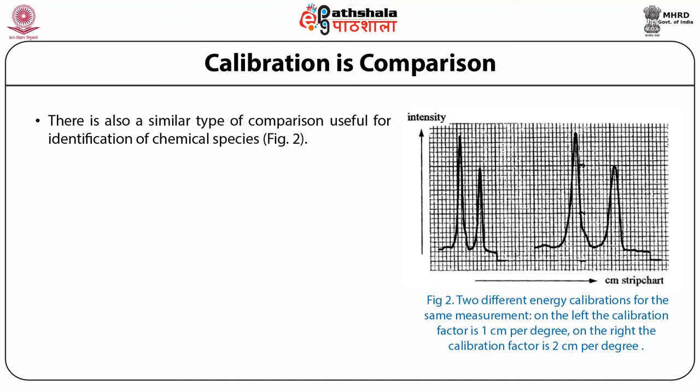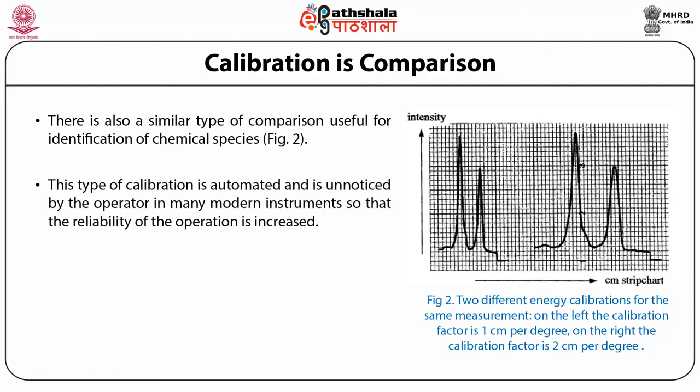There is also a similar type of comparison useful for identification of chemical species, as shown in figure two. Two different energy calibrations for the same measurement are shown: on the left, the calibration factor is one centimeter per degree; on the right, it is two centimeters per degree. This type of calibration is automated and unnoticed by operators in many modern instruments, so that the reliability of operation is increased.